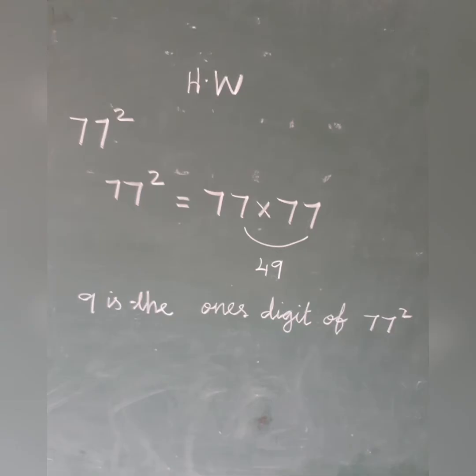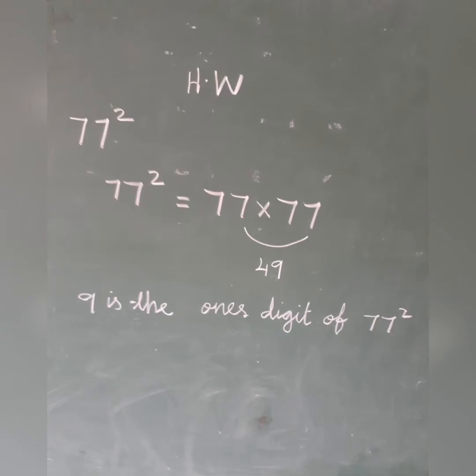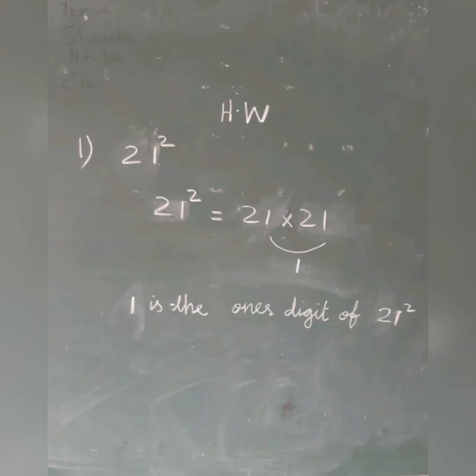Now today's homework — that is last day's homework. 77 squared and 21 squared: we want to find the ones digit. For 77², multiply ones digits: 7 × 7 = 49, so the ones digit is 9. For 21², ones digit is 1 × 1 = 1, so the ones digit of 21² is 1.